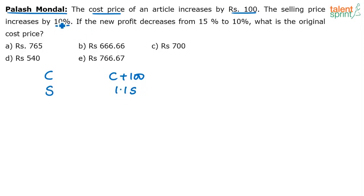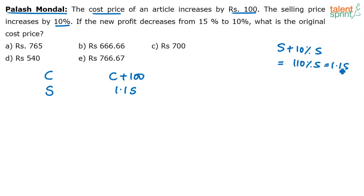Increasing by 10% makes the selling price 1.1 times. S plus 10% of S — S itself is 100% of S, so 100% plus 10% is 110%, and 110% of S equals 1.1S. So: cost price is C, new cost price is C plus 100, original selling price is S, and new selling price is 1.1S.